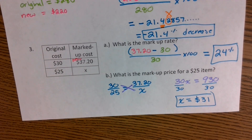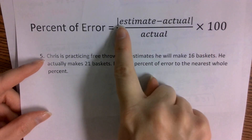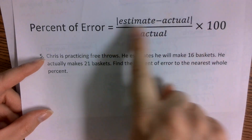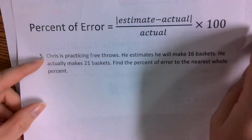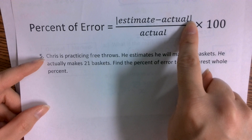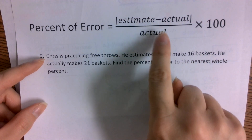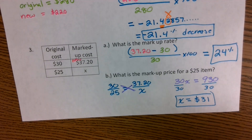I want you guys to try problem four on your own, and also problem five. Notice that for problem five, the percent of error, it's very similar — just different wording. Instead of parentheses, you have absolute value signs on the ends. It's estimate minus actual, you take the absolute value of that subtraction, divide by the actual value, and multiply by 100. It's called percent of error, but it's a very similar process.